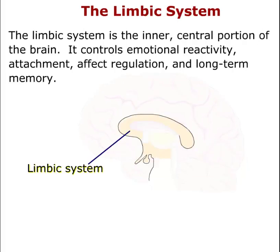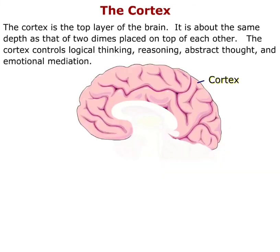The limbic system is the inner central portion of the brain. It controls emotional reactivity, attachment, affect regulation, and long-term memory. The cortex is the top layer of the brain. It is about the same depth as two dimes placed on top of each other.